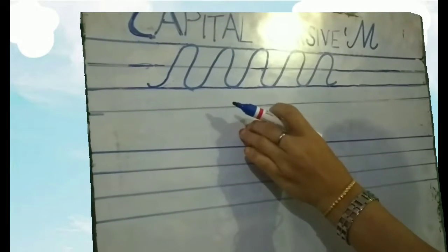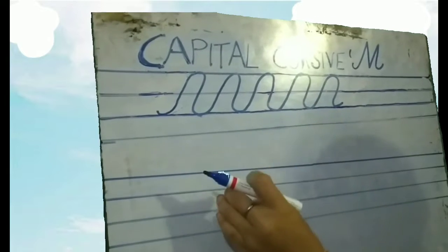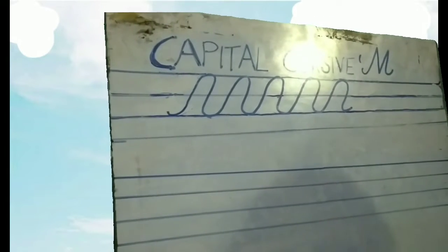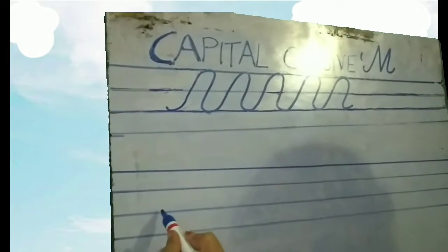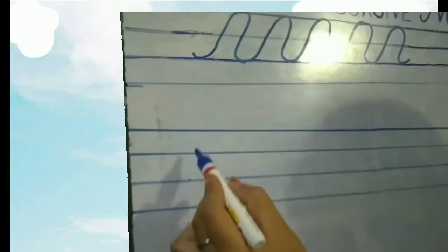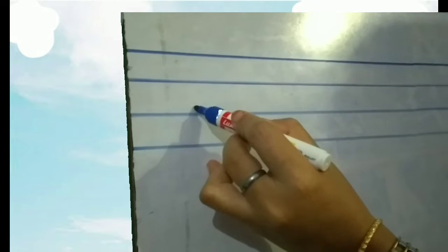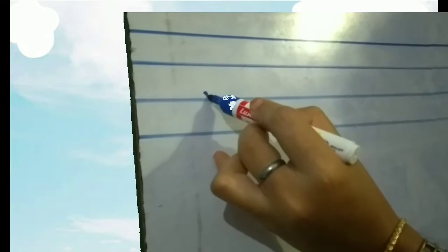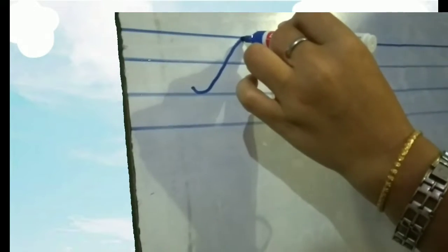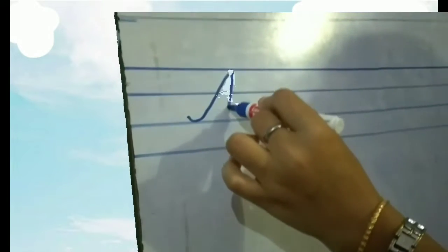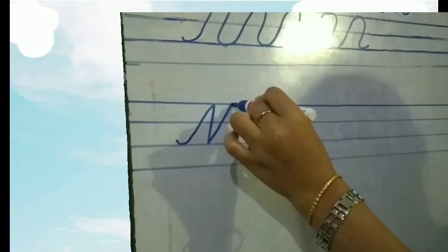Now we have learned the strokes, so we are going to write the capital cursive M. Same as the strokes — you see the third line, first second third. Above the third line, start from here. From here it goes up to the first line, a little slanting. Again goes down to the third line, then bring up touching to the first line.